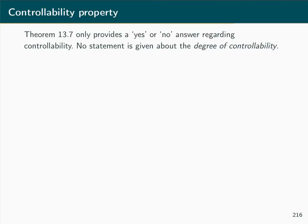A remark on theorem 13.7: it only provides a yes-or-no answer about controllability and makes no statement about the degree of controllability. The term 'degree of controllability' is not precisely defined, but we will try to make it clear through two examples.